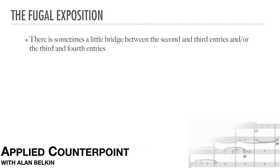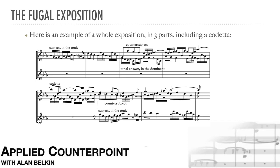One last point about the exposition: there is sometimes a little bridge between the 2nd and 3rd entries, and/or the 3rd and 4th entries. This is done to make the overall proportions less regular and predictable, and to allow for more gradual modulation between entries. This kind of bridge is called a codeta. Here is an example of a whole exposition in three parts, including a codeta. The codeta simply continues the last part of the subject in a sequence, accompanied by the motive first heard at the end of measure 1.